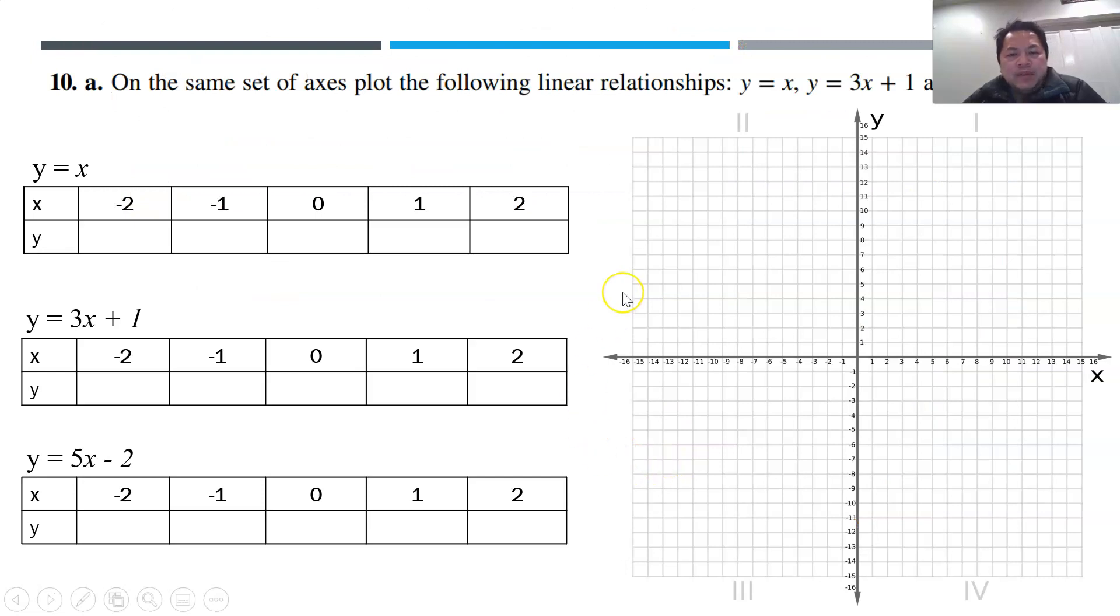So I'm giving you more examples. The next part for 10a, you're supposed to draw these 3 lines: y equals to x, y equals to 3x plus 1, and y equals to 5x minus 2. So I have actually plotted the points. So let's use the same technique. Do it on your own again. y equals to x, just substitute, you know, this is quite straightforward. Minus 2 into it. So you get minus 2, minus 1, 0, 1, and 2.